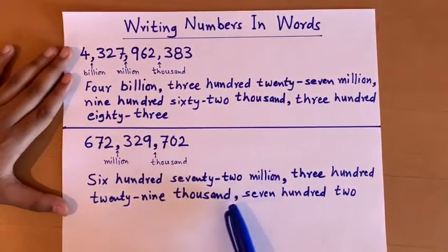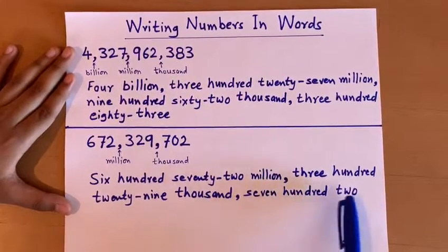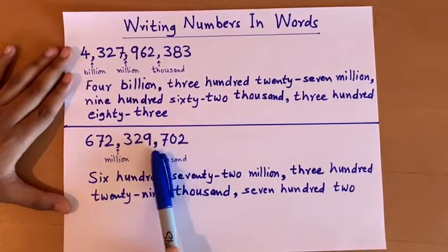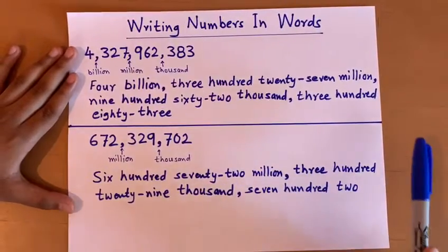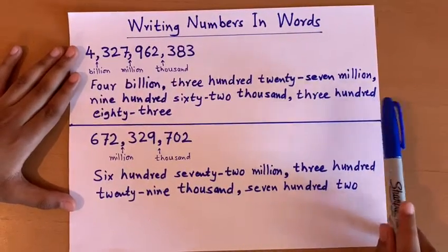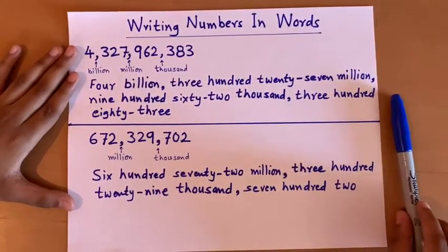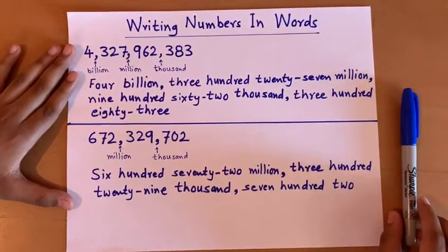we put a comma in the word again, and seven hundred two. We can see in the number that there is a zero here, but we do not write zero in our words. This is how we write numbers in words.